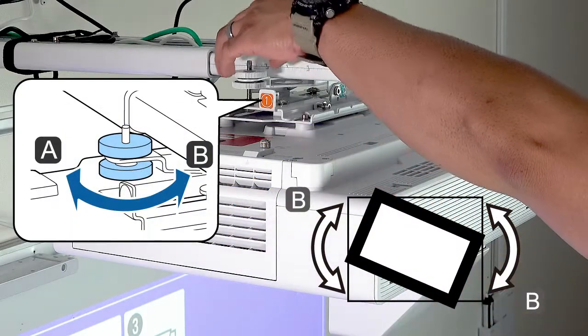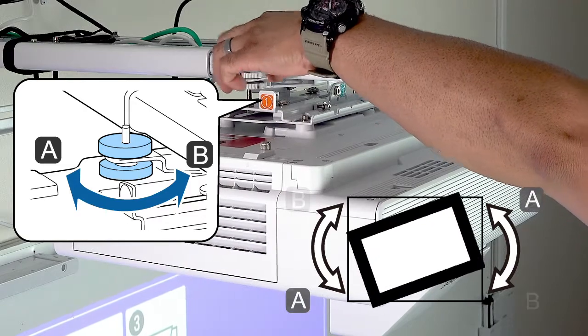The adjustment dial labeled 1 controls the horizontal roll of the projector.